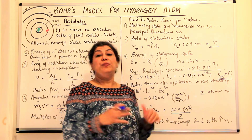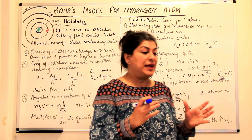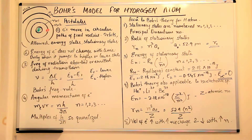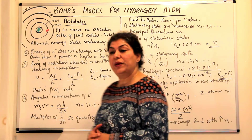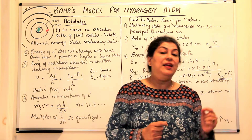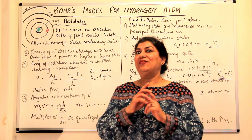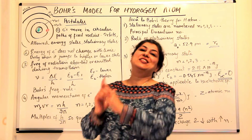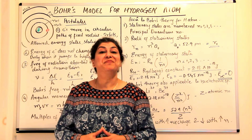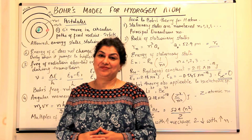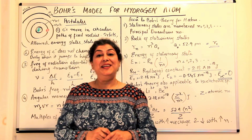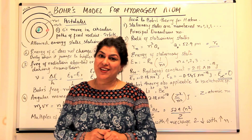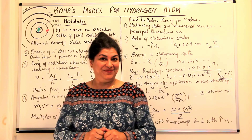So these were the key points of Bohr's model for the hydrogen atom. In the next video we are going to look at how Bohr's model explains the line spectrum of hydrogen, then solve a few numerical problems, then cover the drawbacks of Bohr's model, and finally that will lead us to the quantum mechanical model. Thank you for watching — please leave your comments if you have any queries, subscribe to my channel, and like the video. Thank you.